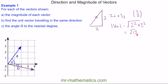Now we're going to work out a unit vector traveling in the same direction. This means it travels in the same direction — so it is parallel — but now we're traveling one unit. We write this as  with a hat on top. This will be 2i plus 3j divided by the magnitude of vector A, which is the square root of 13.